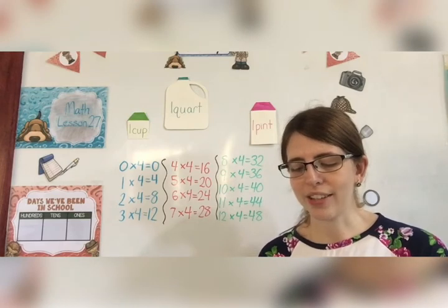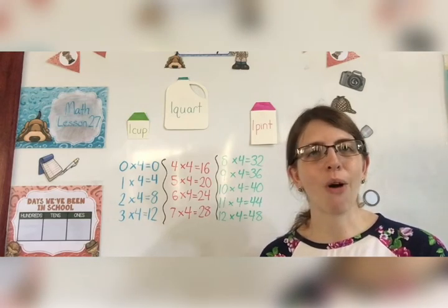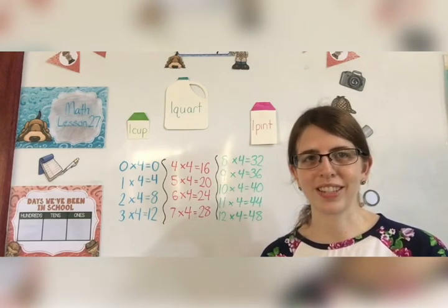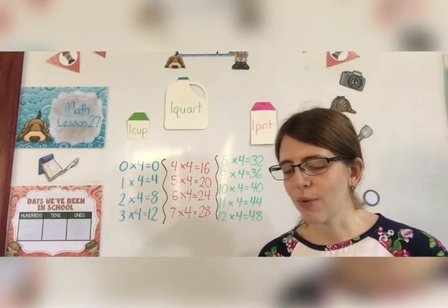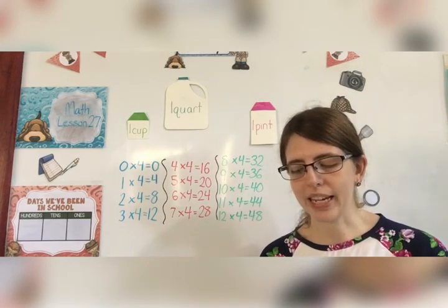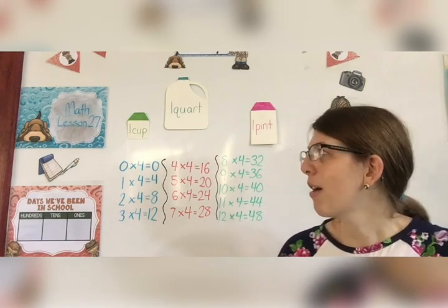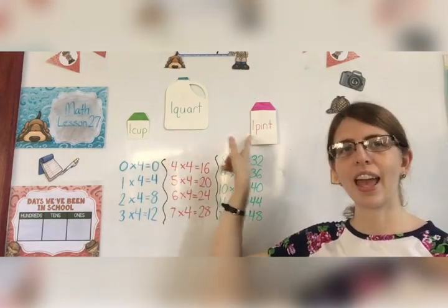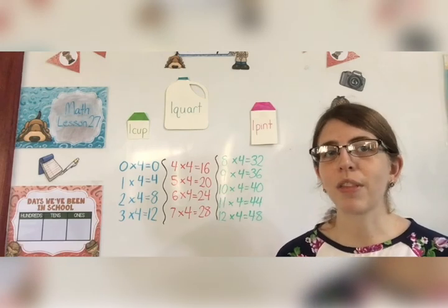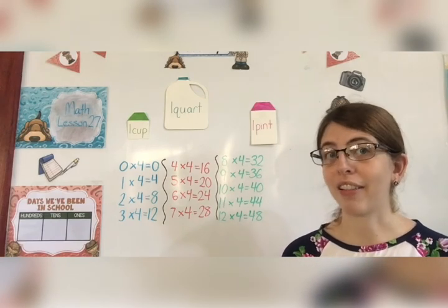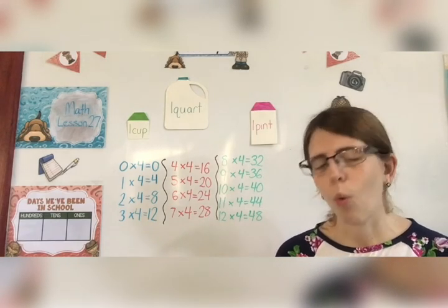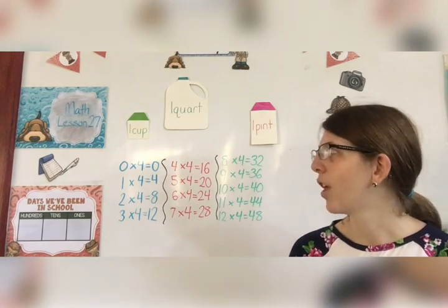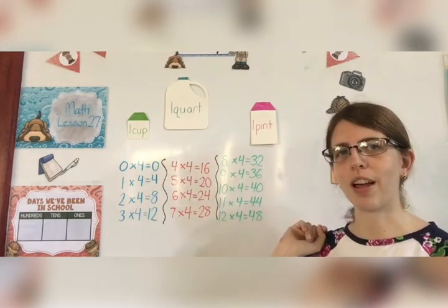Number 2 says write in order from smallest to largest. So I'm going to help you with that. You have cup, gallon, pint and quart. Here on my board, I don't have my gallon but I do have a cup, a quart and a pint. So let's start with these ones and we'll find where gallon needs to go as well. What's the smallest one? Well, if you look, it's pretty easy to find the smallest one. What is it?